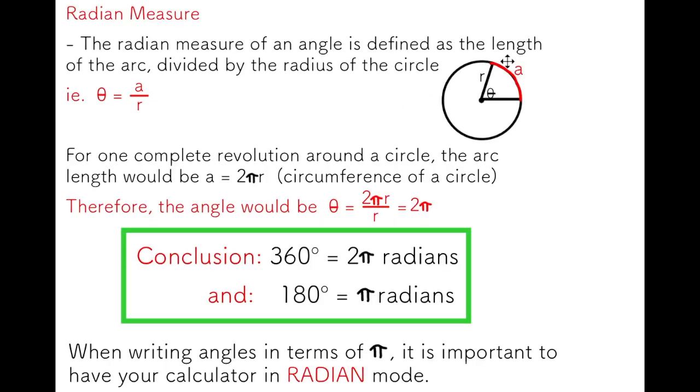We're going to define radian measure as the length of the arc divided by the radius of a circle. If I take a terminal arm and rotate it through some angle theta, I can define radian measure as the length of the arc over the radius.